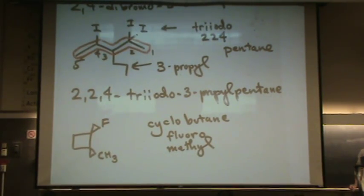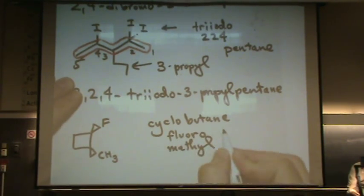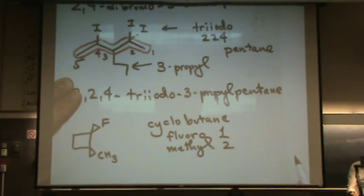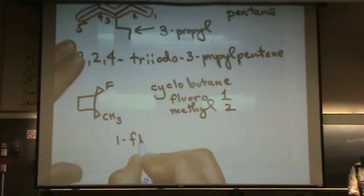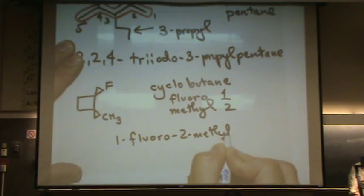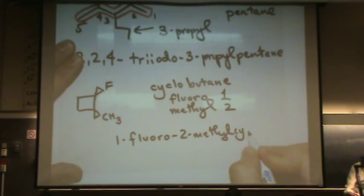Which one's going to have the one position? The fluoro because it's lower in alphabetical order. So, we'll have a one here and this will be the two position. One, fluoro, two methyl, cyclobutane.